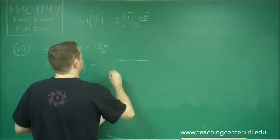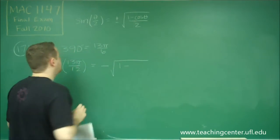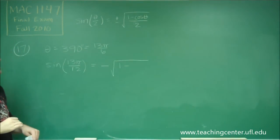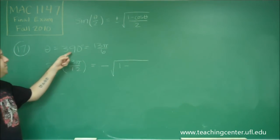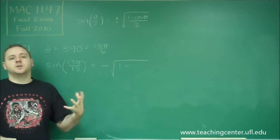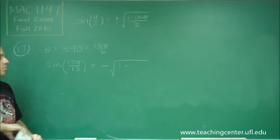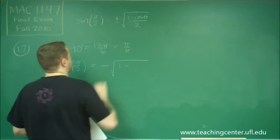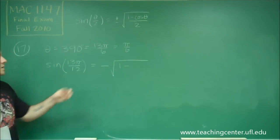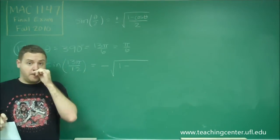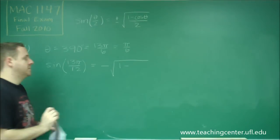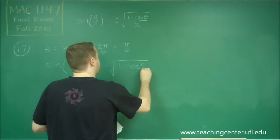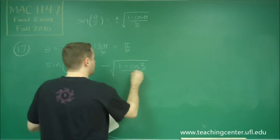And let's see what we get here. So we're going to get 1 minus cosine of 13 pi over 6. But remember, since this is bigger than 360, we can just use the reference angle. So this is the same as just having pi over 6, because you can just subtract 2 pi from 13 pi over 6. So we have 1 minus cosine of pi over 6, all divided by 2.